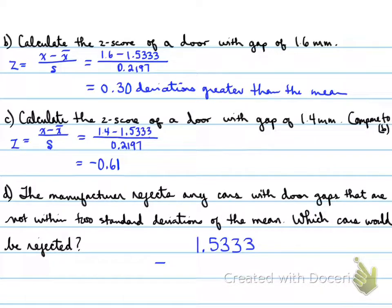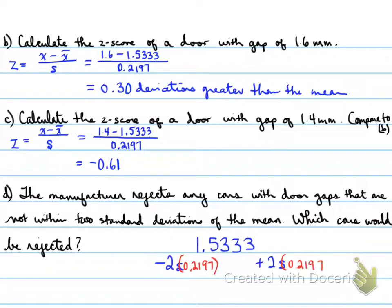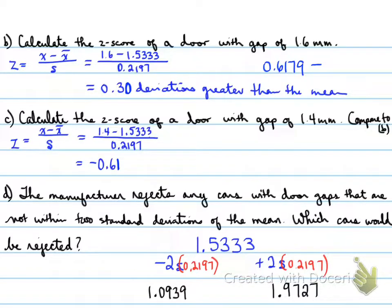The manufacturer rejects any cars with door gaps not within two standard deviations of the mean. Subtracting and adding two standard deviations (0.2197) from the mean gives a range of 1.0939 to 1.9727. Any gap smaller than 1.0939 or greater than 1.9727 would be rejected. We can check which cars fall outside this range to determine how many would be rejected.